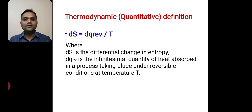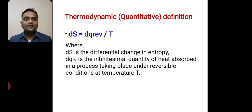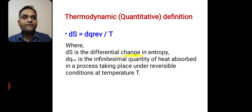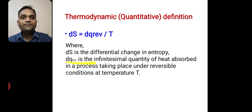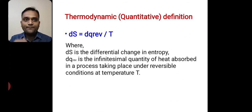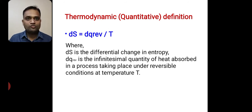What is dS? When we write the small d before the entropy, that dS is the differential change in entropy. What is dq reversible? dq reversible is the infinitesimal quantity of heat absorbed in a process taking place under reversible conditions at temperature T. And T is the temperature. This is the thermodynamic definition of entropy.